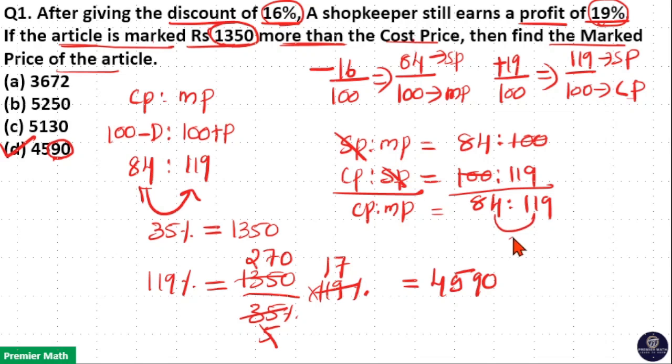Now you can see the difference is 35 which is equal to 1350. So you will get this answer anyway.